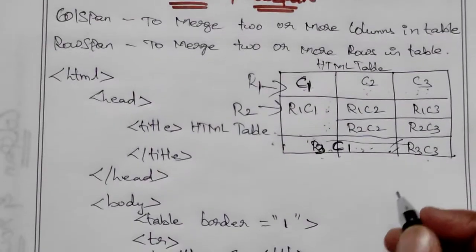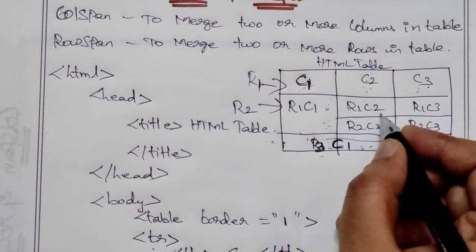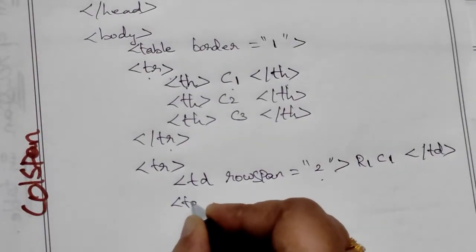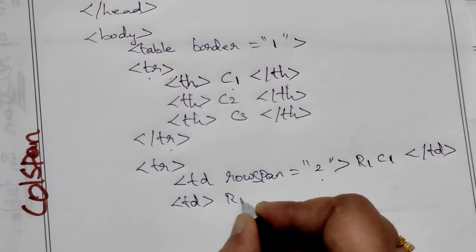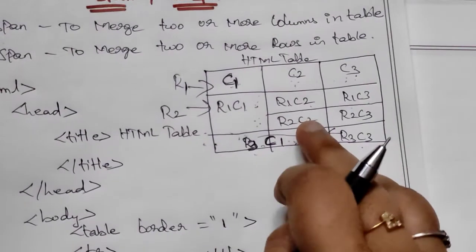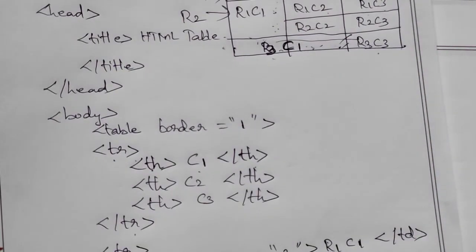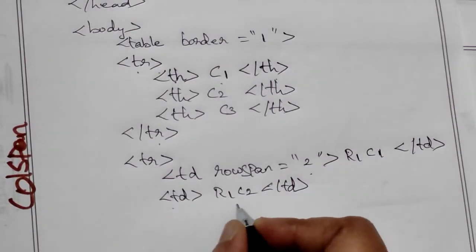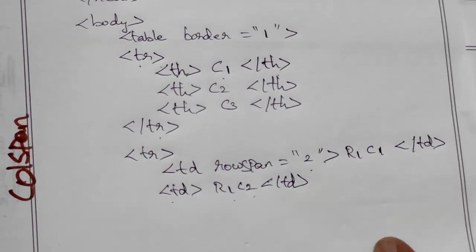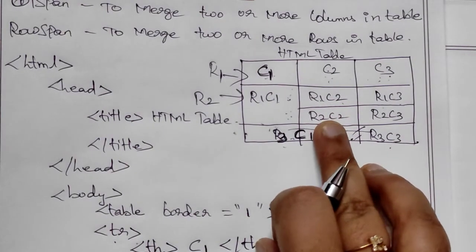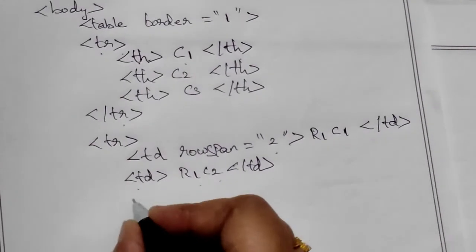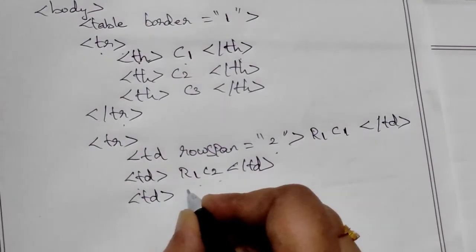Next it is second cell, R1C2 and R1C3. So that cell create. TD — R1C2. Second cell R1C2, so R1C2. Then R1C3, R1C3, create. And the row close.